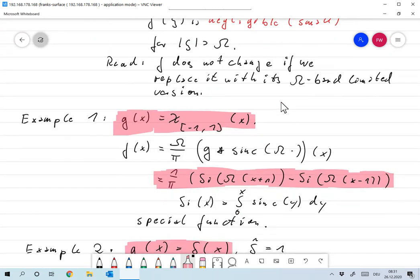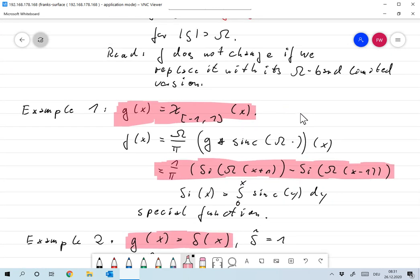Okay, let me give you two examples, and I will discuss these in programs. But here's the analysis behind it. Let's take as the first example the characteristic function of the unit interval [-1, 1]. Then using the formula above, I can plug in the g over here, and we find that the band-limited version of g can actually be computed analytically.